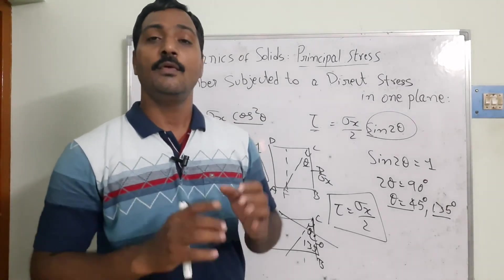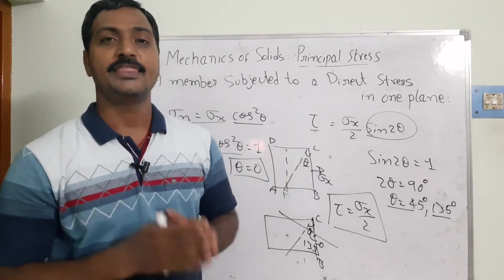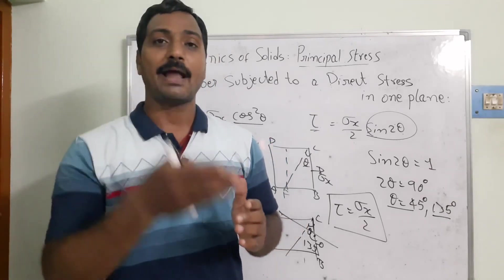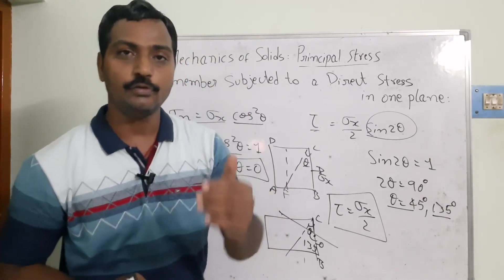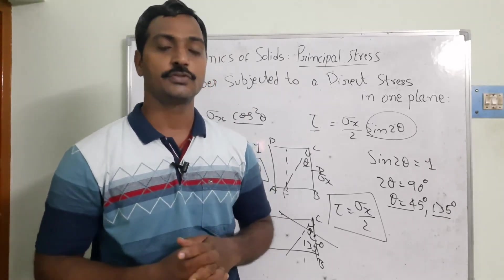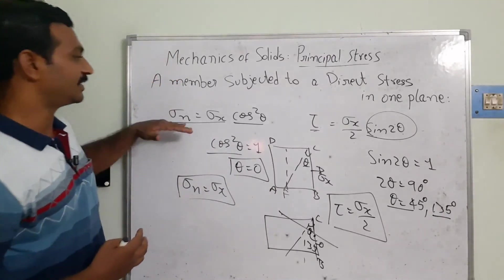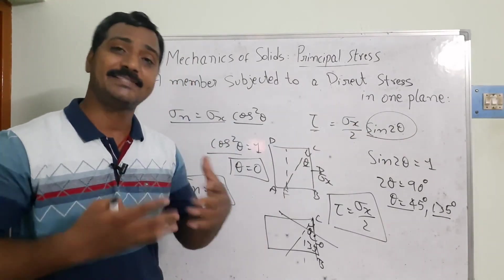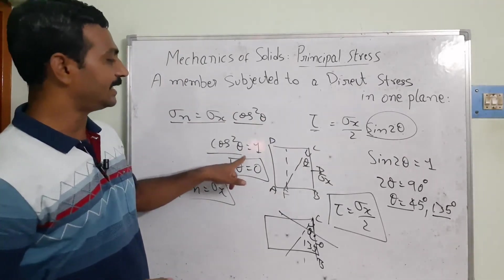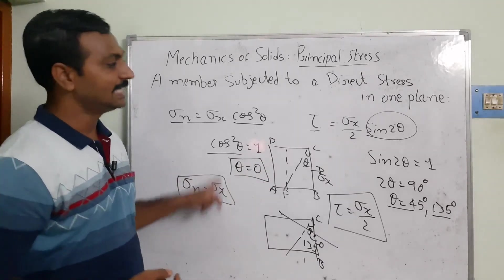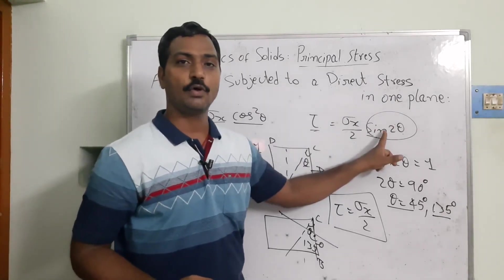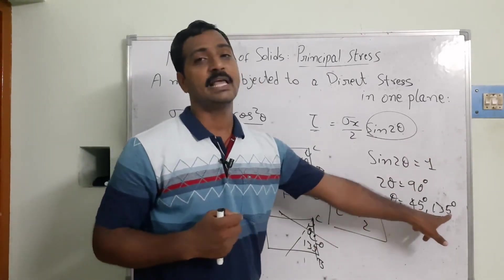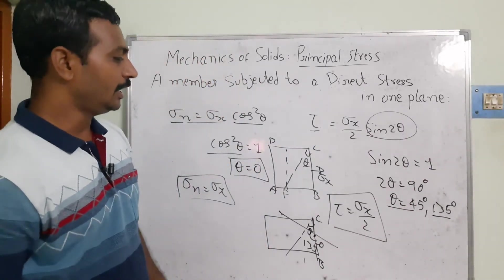To summarize: we took a two-dimensional object with direct stresses acting normally on face BC, then considered an inclined surface, and resolved forces into components normal and parallel to the inclined plane. Normal to the inclined plane gives normal stresses; parallel gives tangential stresses. We derived Sigma N = Sigma X × cos²θ and tau = (Sigma X / 2) × sin 2θ. When theta = 0, Sigma N = Sigma X (maximum normal stress). When theta = 45° or 135°, tau = Sigma X / 2 (maximum shear stress).